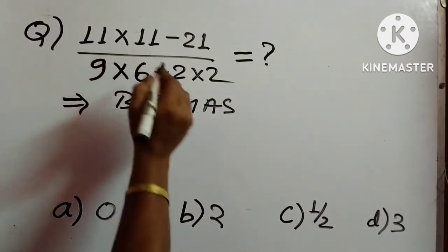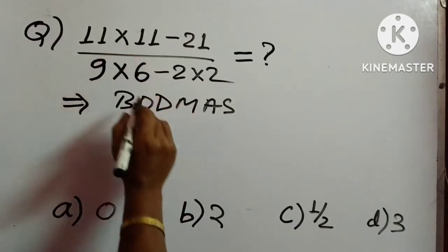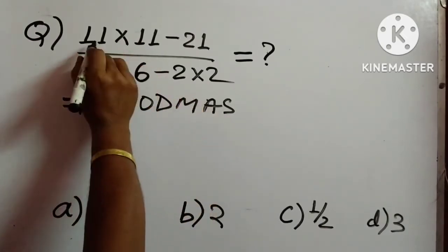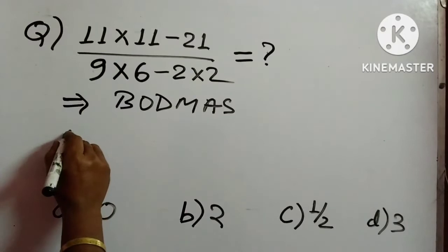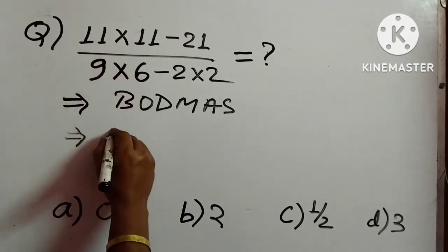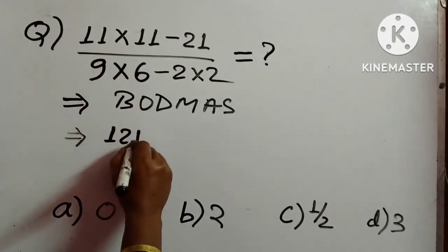So accordingly, multiplication is before subtraction. So we have to work out multiplication first. So 11 into 11 is 121, then minus 21.